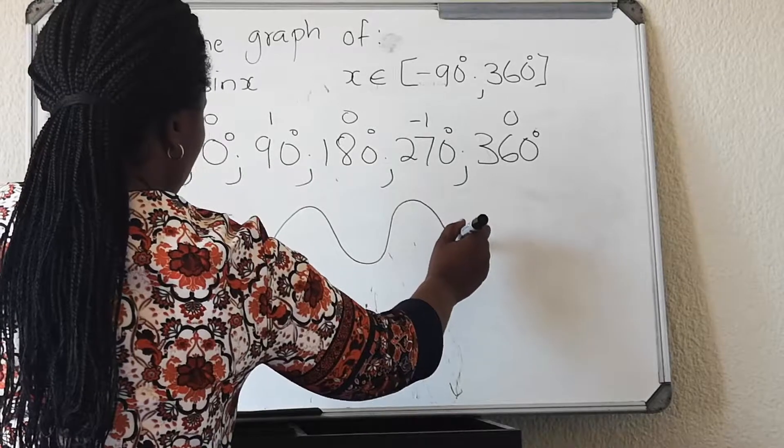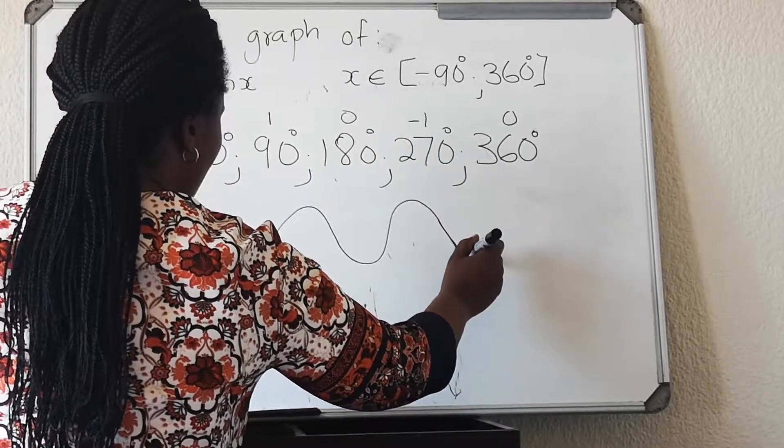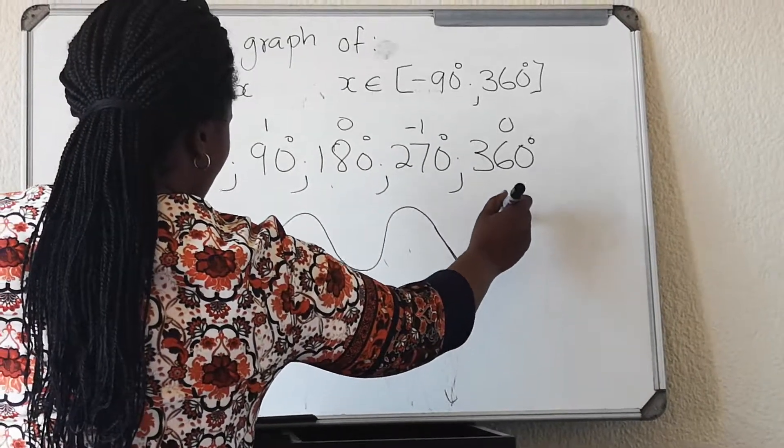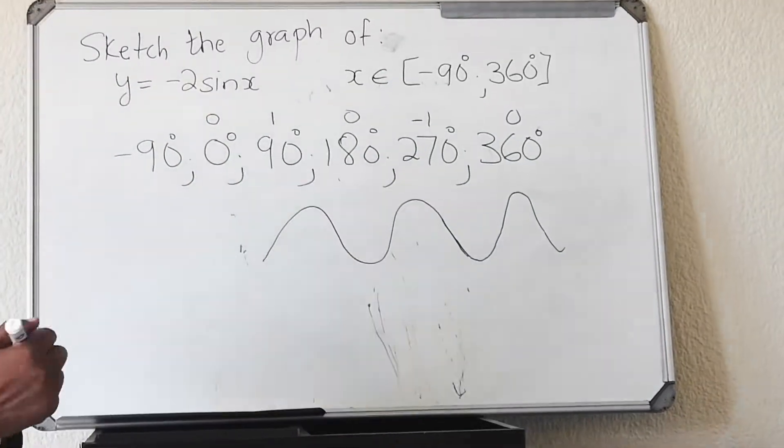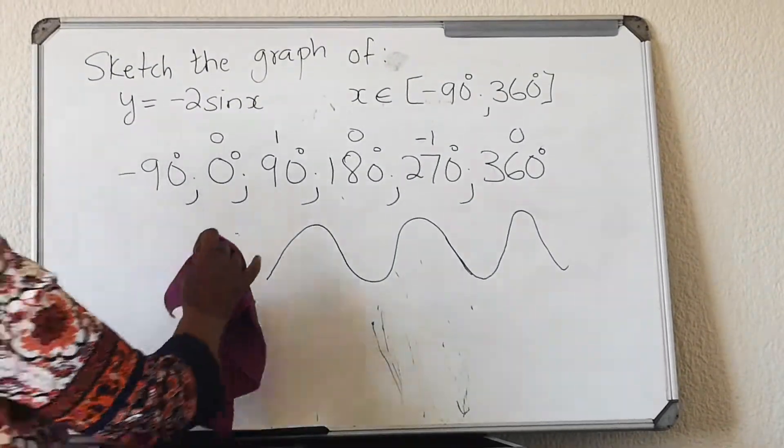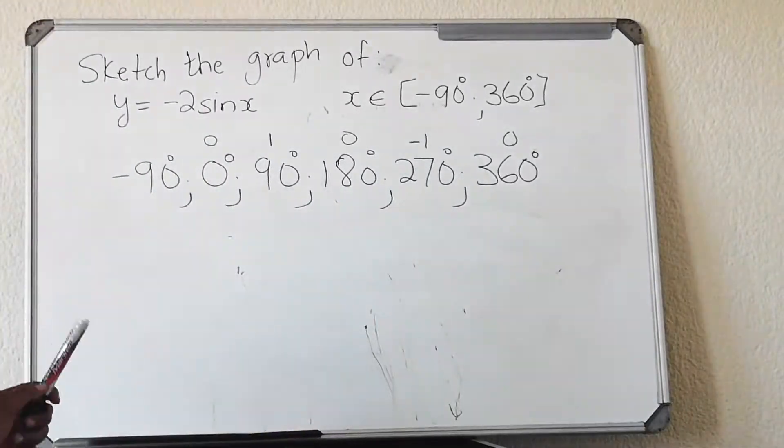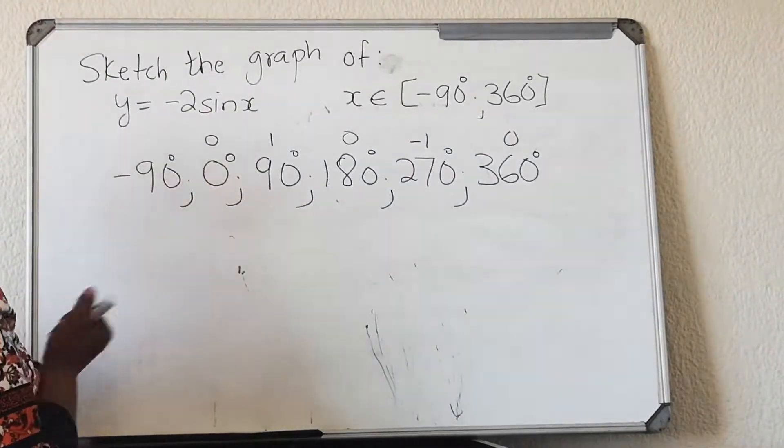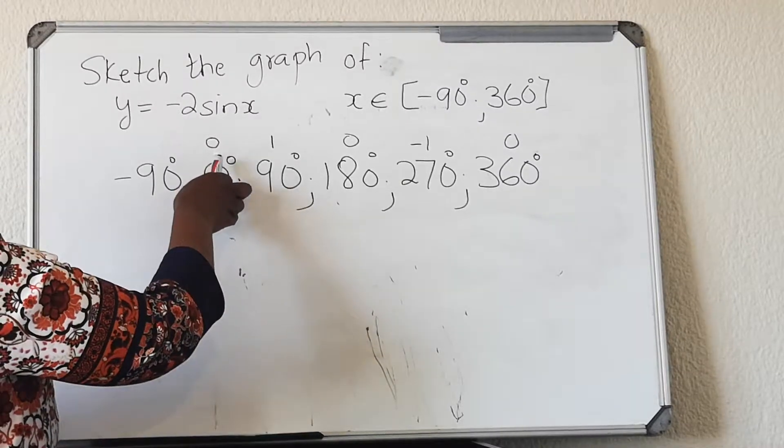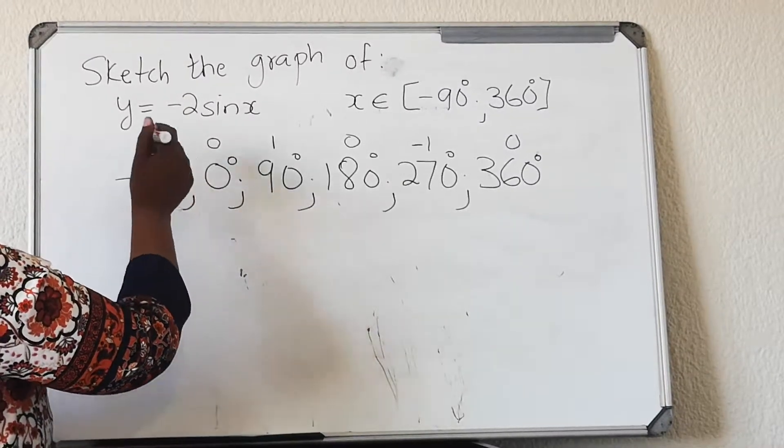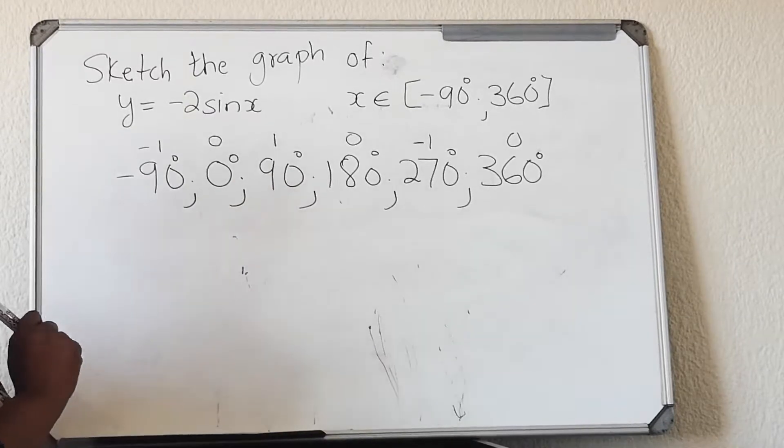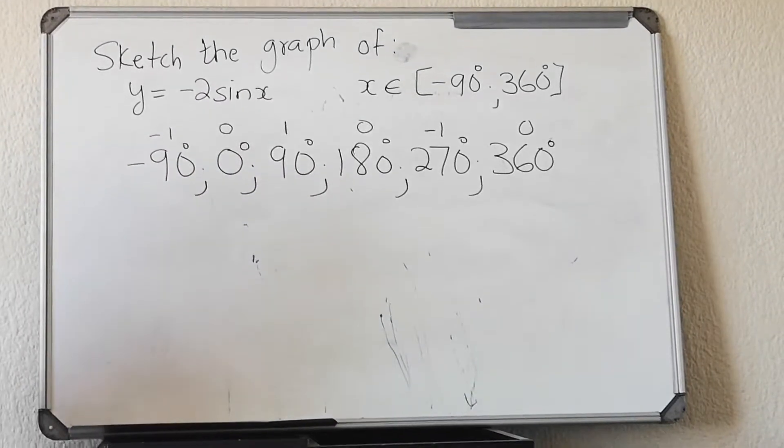Because the graph goes like this, so it will go 0, 0, minus 1, 0, 1, 0, minus 1. Right? Then here I have 0, minus 1. Right? This is my standard form.